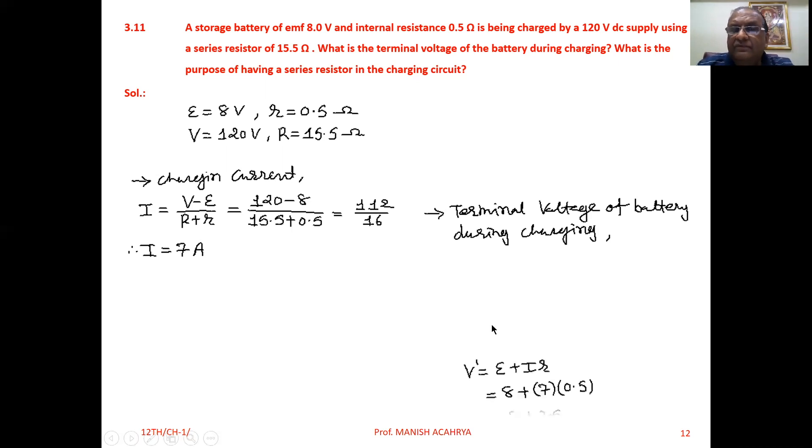So now we have to take the equation for the terminal voltage as V' = E + Ir. When the battery is in use, we write the equation for terminal voltage as V' = E - Ir. But in the charging process, we have to take V' = E + Ir.